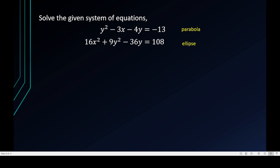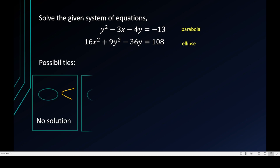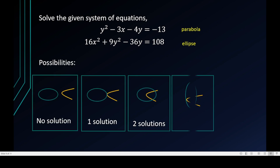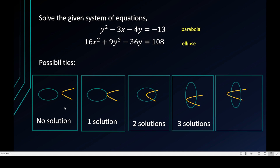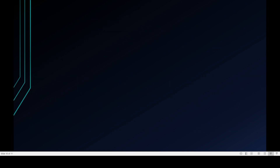Going back to the slides, as before, these are the possibilities: no solution, one solution, two solutions, three solutions, and four solutions — the last occurring when the parabola crosses the ellipse four times. Based on the graph, we appear to have one intersection. Now for the algebraic solution.